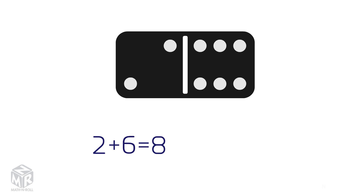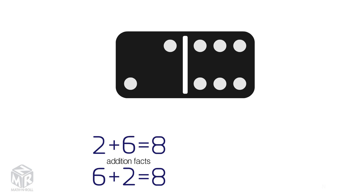Let's try another example. 2 plus 6 equals 8. 2 and 6 are the add-ins and 8 is the sum. We can change the order of the add-ins and the sum will still be the same. 6 plus 2 also equals 8. These are the addition facts.